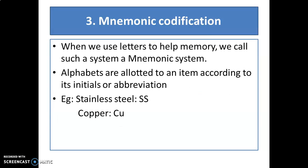Mnemonic codification: when we use letters to help memory, we call such a system a mnemonic system. Certain materials are coded with letters. Alphabets are allotted to an item according to its initial or abbreviation. For example, stainless steel can be represented as SS, and copper as CU.